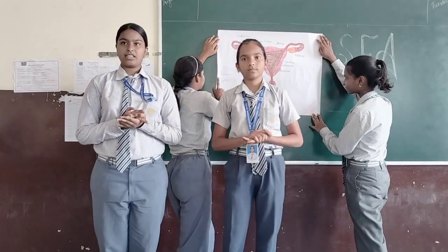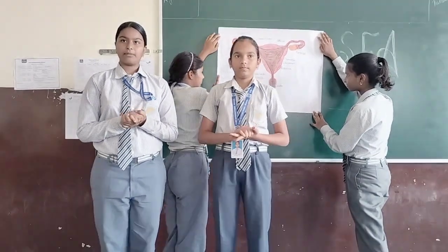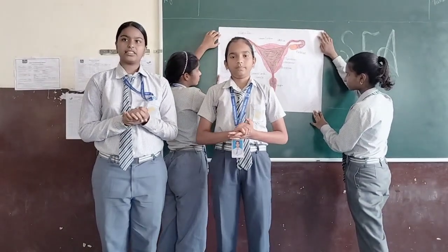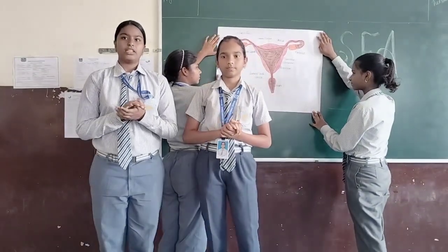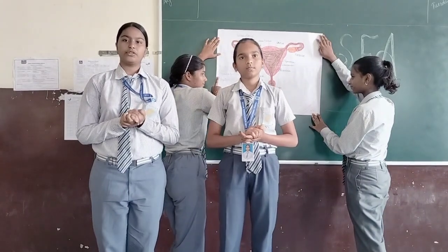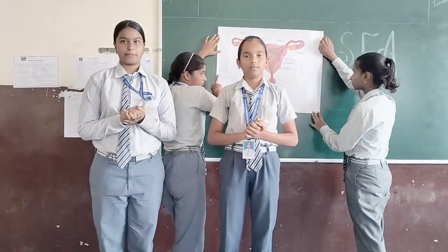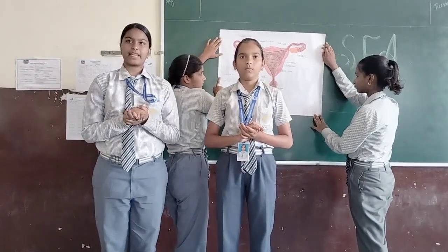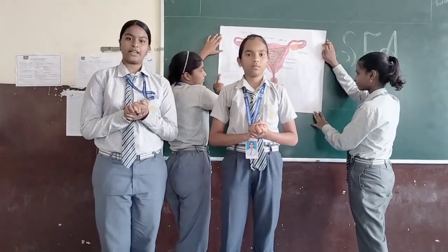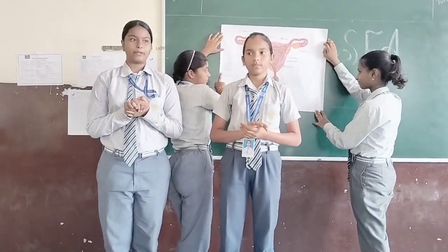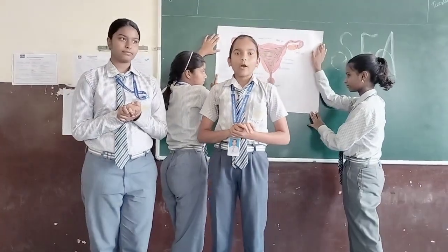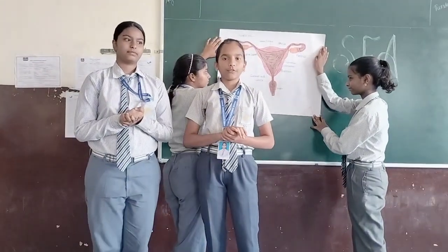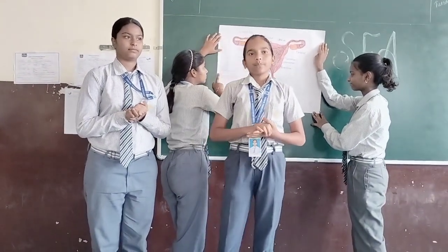The Uterus, or womb, is a hollow pear-shaped organ that is the home to a developing fetus. The main body of the Uterus is called the Corpus. The corpus can easily expand to hold the developing fetus. Now I will discuss about the 3 layers of the Uterus.